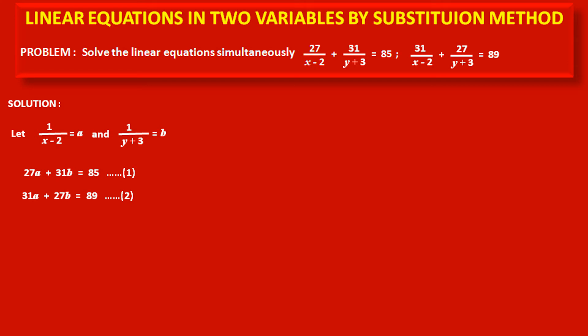Now see these two equations carefully. In equation 1, the coefficient of a is 27, and the same value appears in equation 2 for variable b. In equation 1, the coefficient of b is 31, and the same appears for variable a in equation 2. In such type of problem, we first add these two equations, then subtract them, giving us equations 3 and 4, which we then solve.